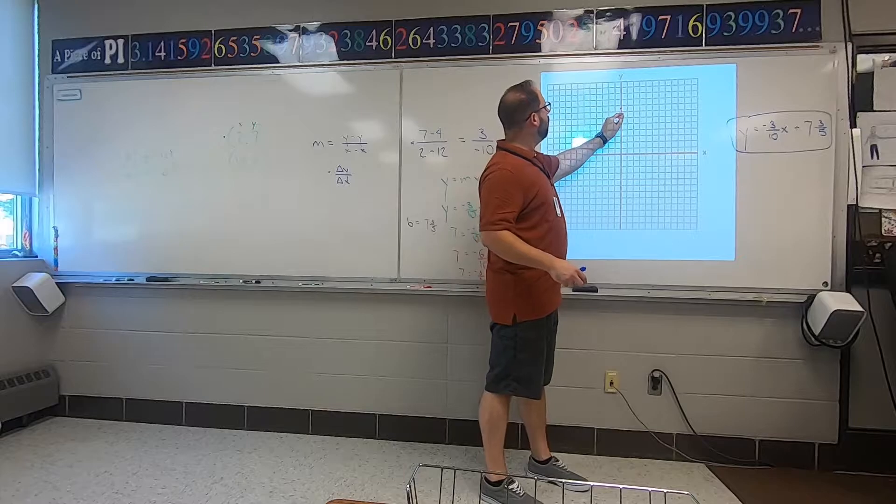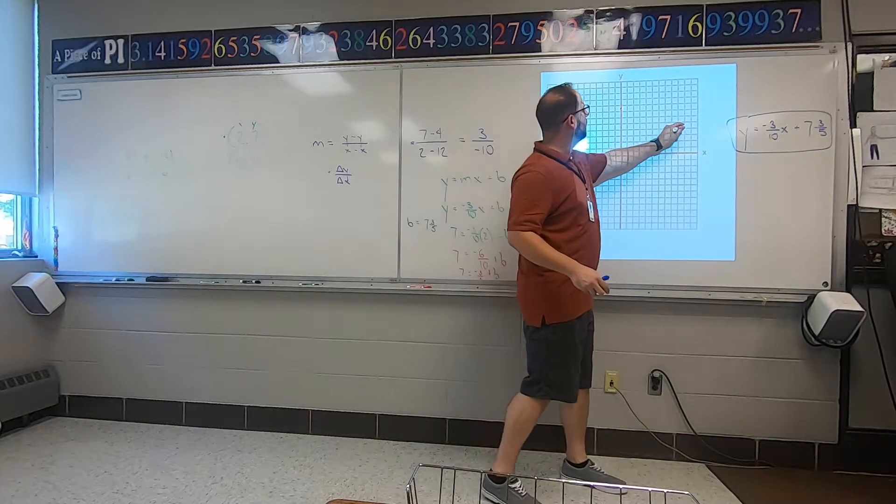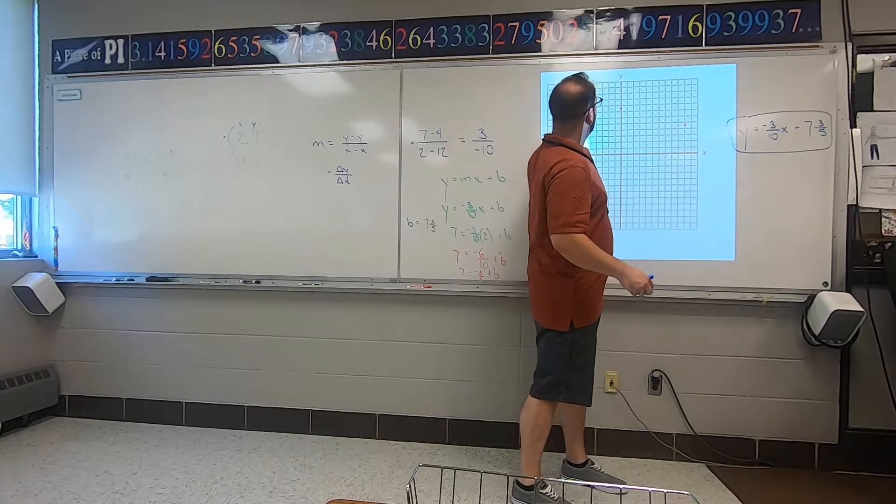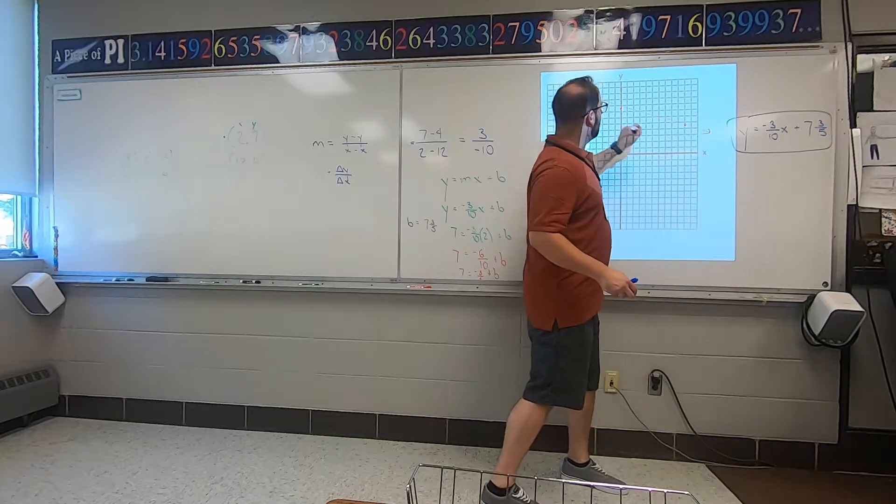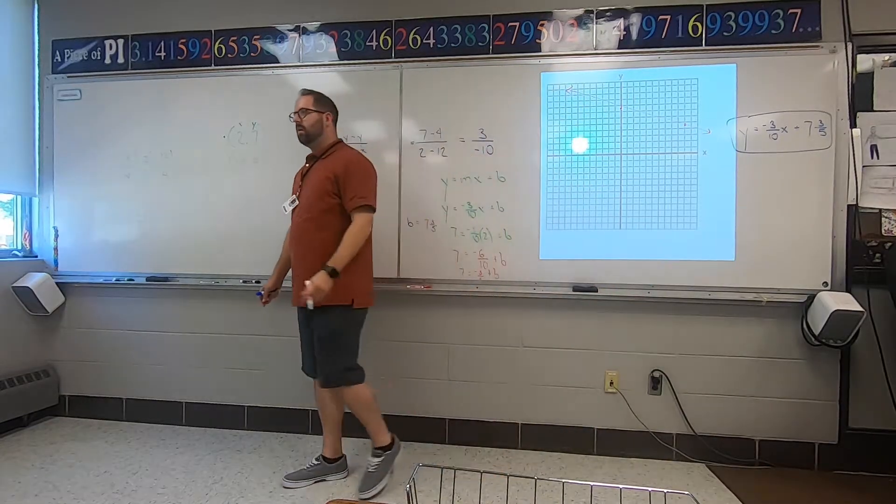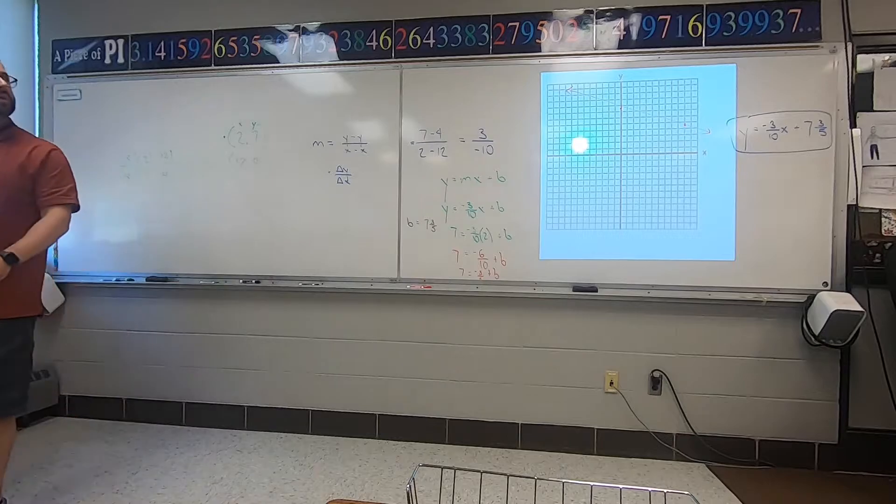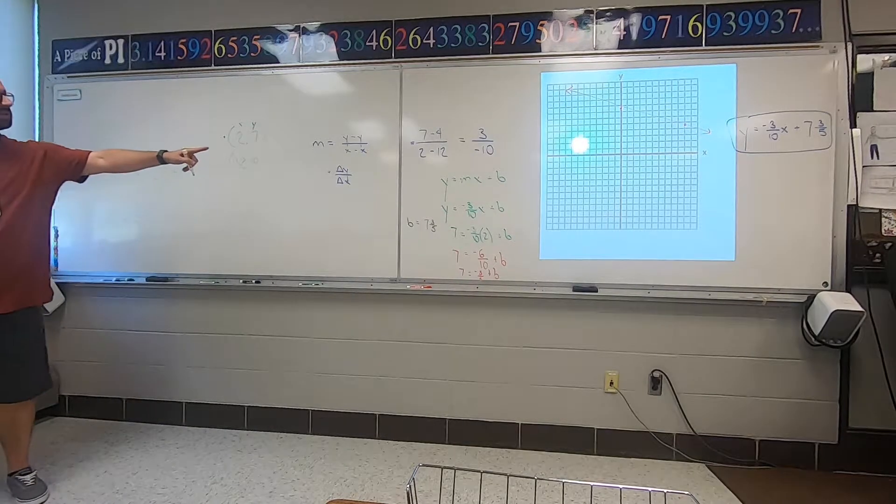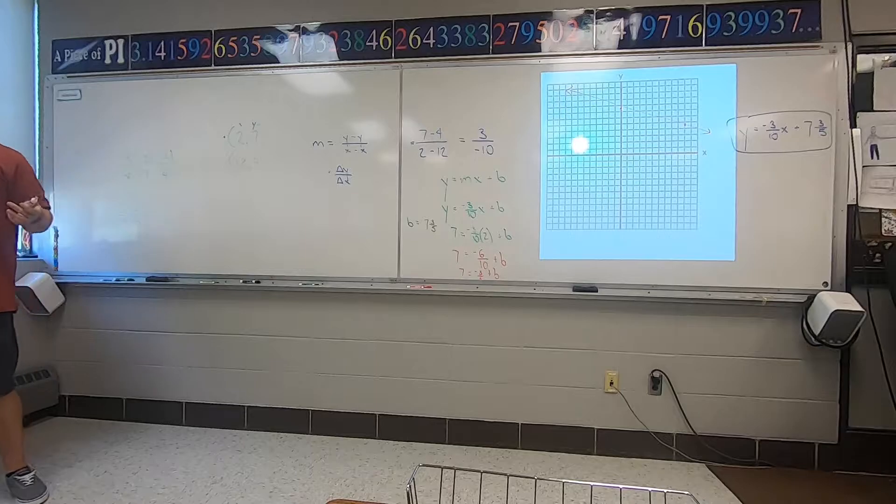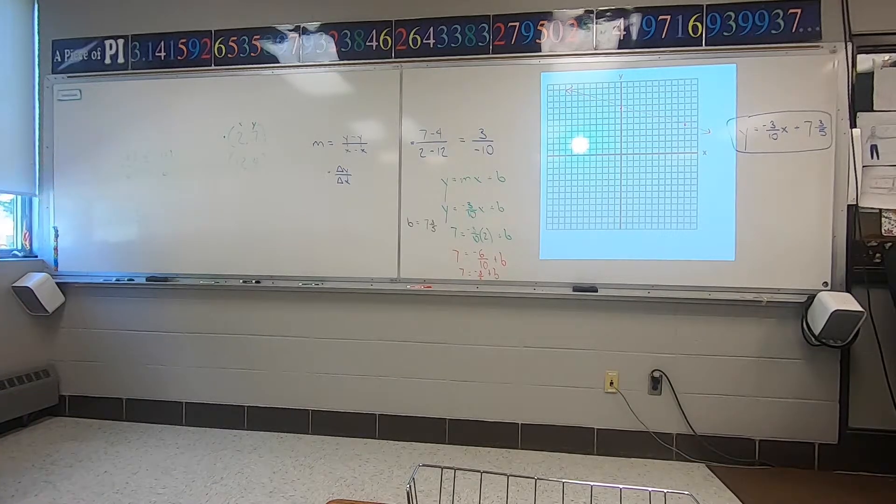My slope tells me to drop three, one, two, three, and run ten. Wait. And there's my one. You mean run five? Wait, what happened to three-fifths? Three-tenths is my slope. Oh, what happened?